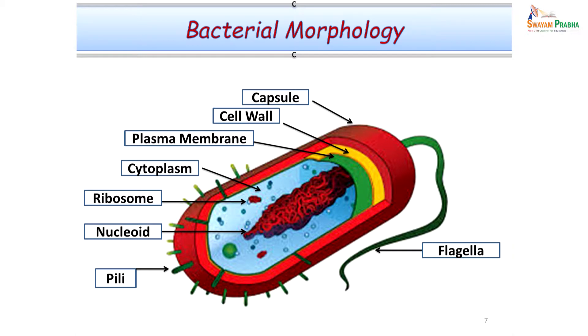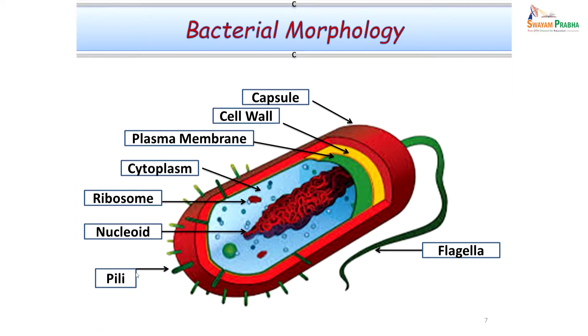Moving further to bacterial morphology — learning bacterial morphology is important. Bacteria have several appendages: the capsule, which may harbor very important antigens; the cell wall, which is important because it helps us differentiate between gram positive and gram negative ones. Bacteria also have virulence factors like pili and flagella, which could also contain antigens. The flagellum and pili help in initiating infection by helping the bacteria adhere to our mucosal cell lining.